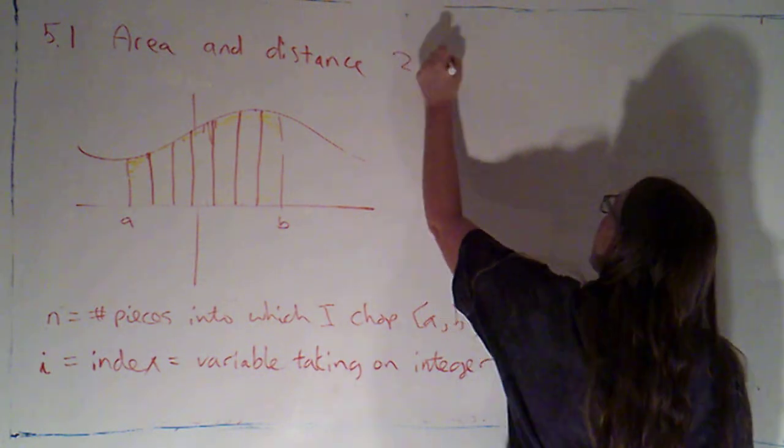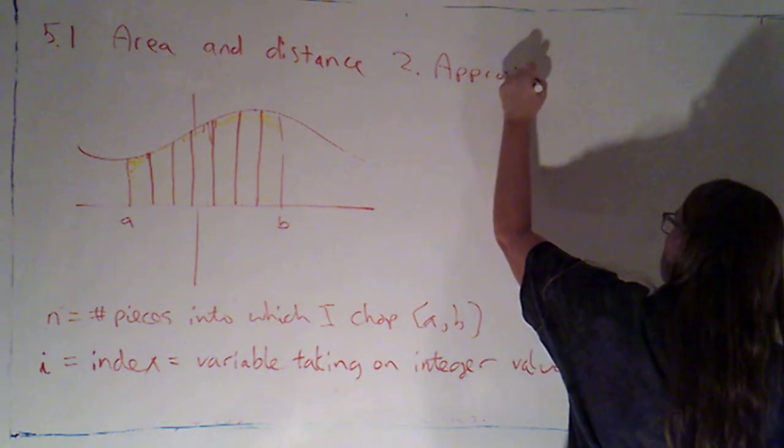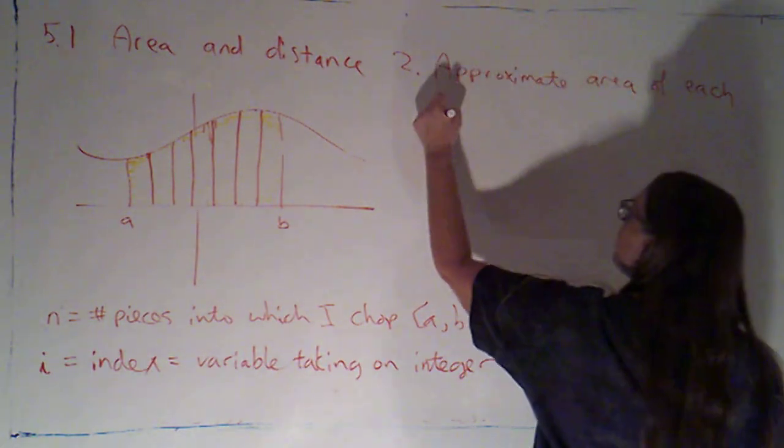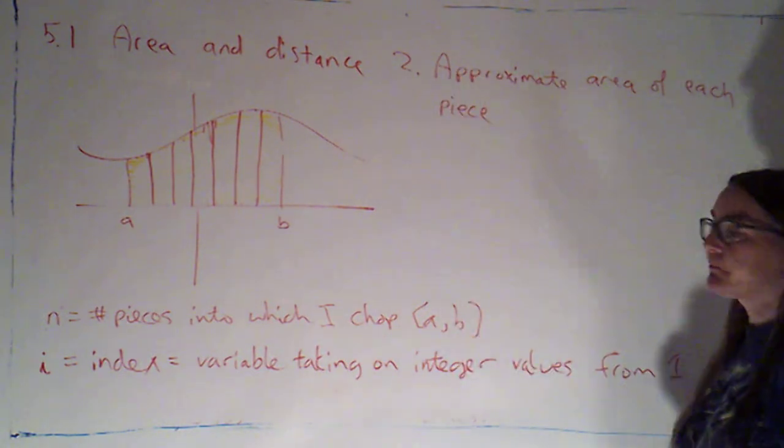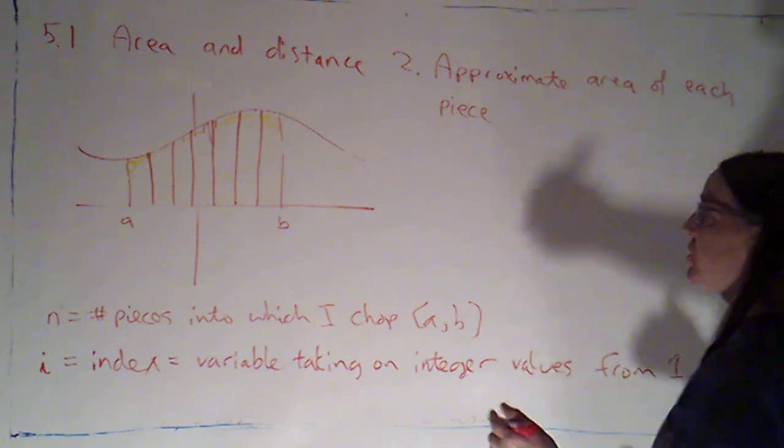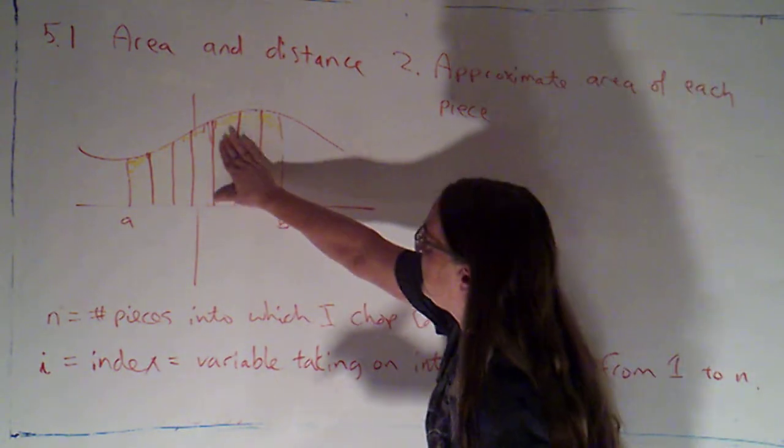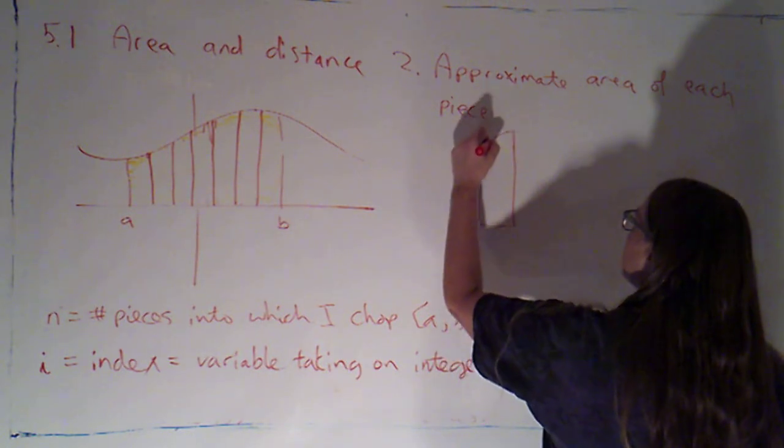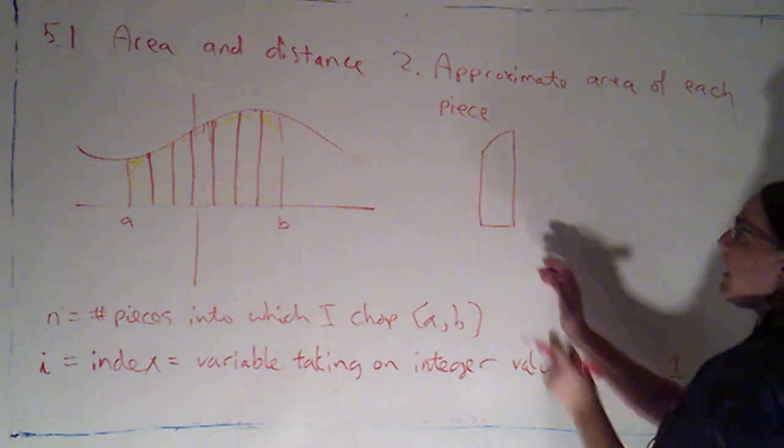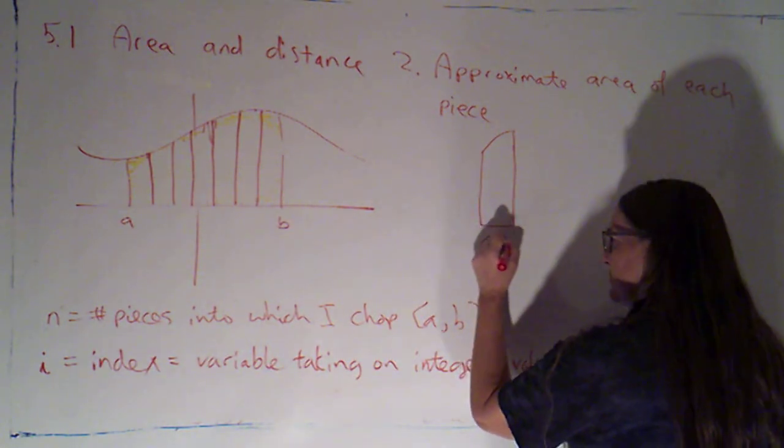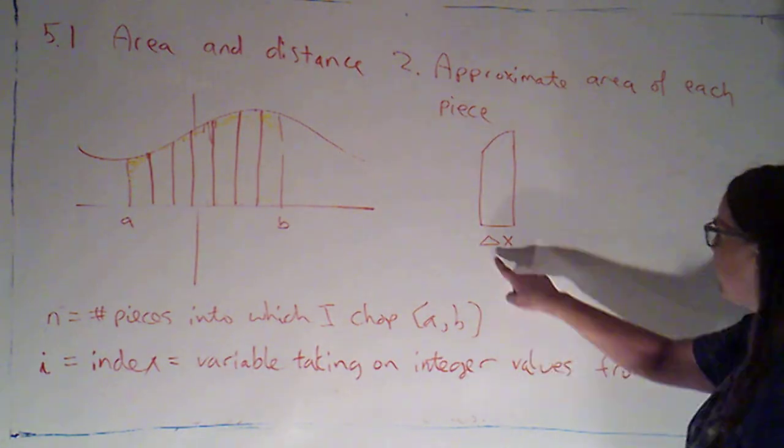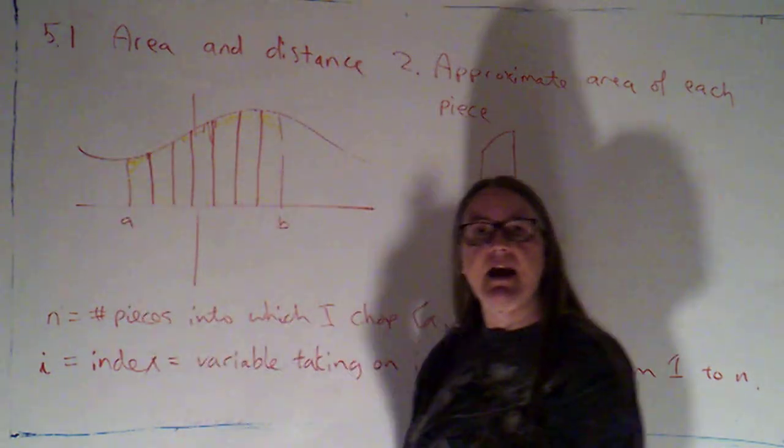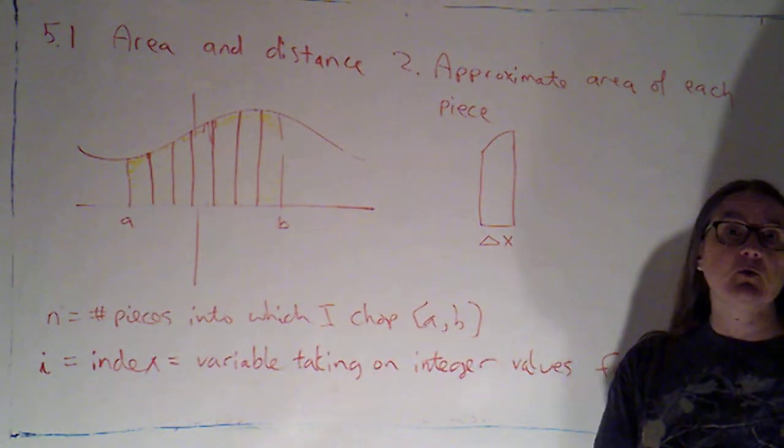Step two, I'm going to approximate the area of each piece. So, I'm going to pick a generic piece, maybe something that looks like that. So I'm going to have something that looks kind of like so. Now, I know that the thickness here, if I've used a regular partition, and we decided we would, this is just going to be delta x. Remember, that was the length b minus a divided by n, because I decided to chop this up into n equal pieces.